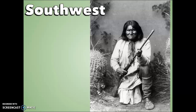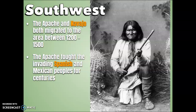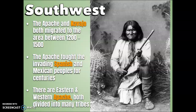In the Southwest, we have the Apache and the Navajo, both migrating to the area between 1200 and 1500. The Navajo is also one of the biggest Native American tribes still in existence today. The Apache fought the invading Spanish and Mexican peoples for centuries, and there are Eastern and Western Apache, both divided into many tribes. The term Navajo actually comes from Spanish missionaries; they refer to themselves as the Dine, meaning the people. The Navajo and Apache are distant cousins with similar languages, both migrating from northwestern Canada and Alaska. Until contact with the Pueblo and Spanish peoples, the Navajo were largely hunters and gatherers. The tribe then adopted farming techniques from the Pueblo, growing the three sisters — beans, squash, and corn. Traditional Navajo society was organized through matrilineal kinship, with small bands of related kin making decisions on a consensus basis, and women determining lineage.